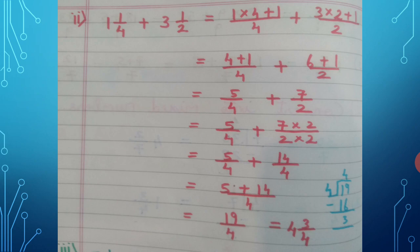Now we can add: 5 + 14 upon 4, which gives 19 upon 4. Dividing 19 by 4, the final answer is 4 and 3 upon 4.